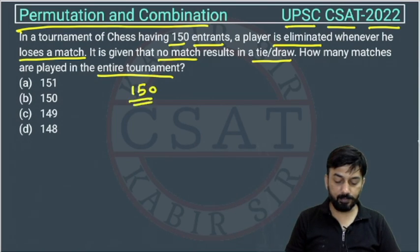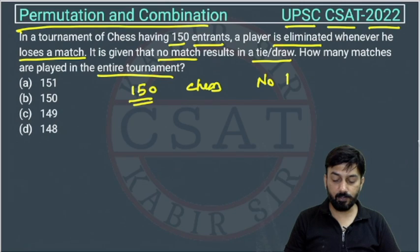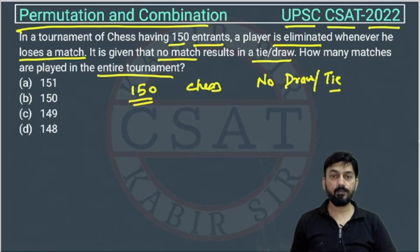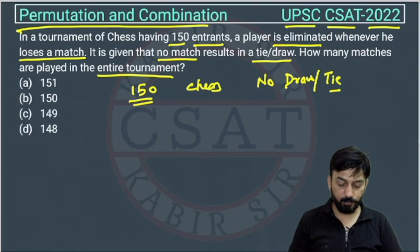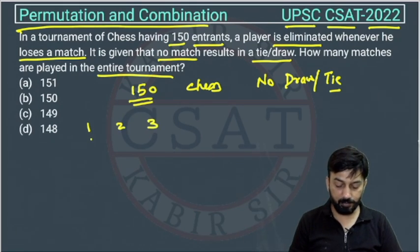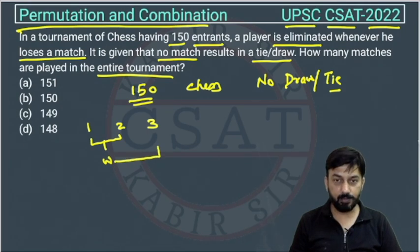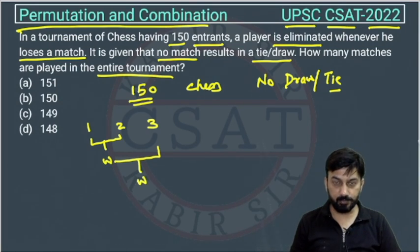All these players are playing chess and no match is a draw. This is a very easy question — you just need to know the concept. Suppose there are three players: first, second, third. One match happens between two of them, the winner then plays the third, and we get a final winner. So with three people, how many matches happen? Two.